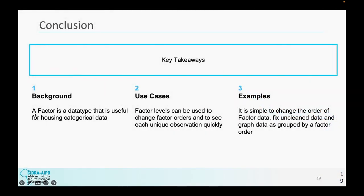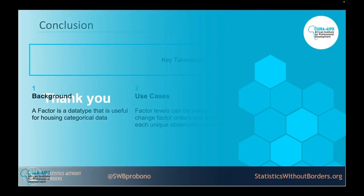But in conclusion, a factor is a data type that is useful for housing categorical data, be it nominal or ordinal. Some use cases, factor levels can be used to change factor orders and to see each unique observation quickly. And the examples we covered show that it is very simple to change the order of factor data, fix unclean data, and graph data as grouped by a factor order. And that is really all that I have for you. So thank you so much and please tune in to our other lessons.